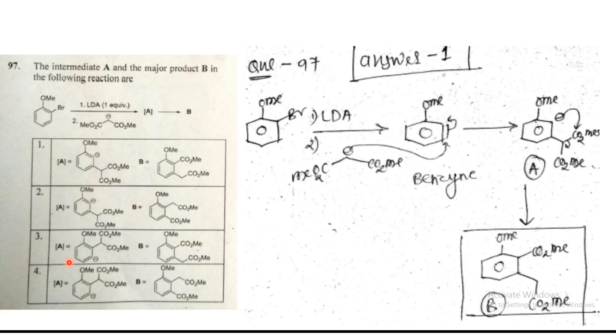So this should be the A compound. You can see here A is this one, either one or second. Third and fourth should not be the answer because at the meta position of methoxy, negative charge is not stable.